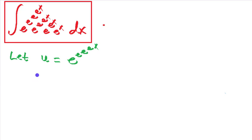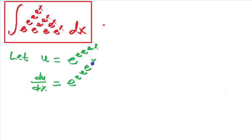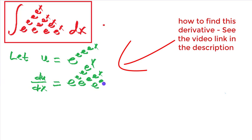I have a link in the description to another video where I show you how to find this derivative. The answer is e to the e to the e to the e to the x, times e to the e to the e to the x, times e to the e to the x, times e to the x. Find the link in the description to see how to do this.